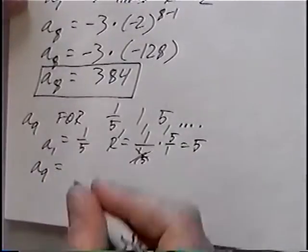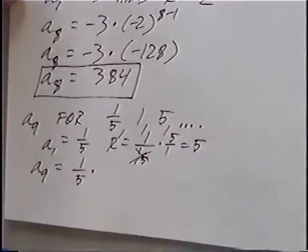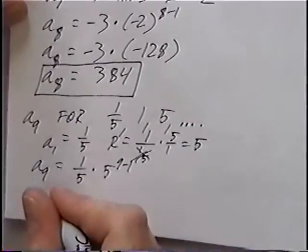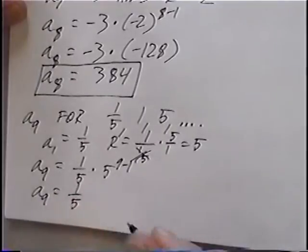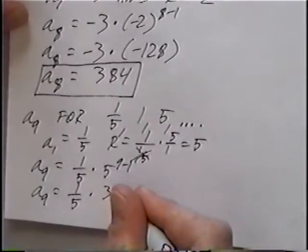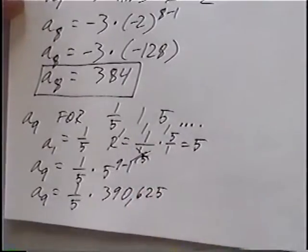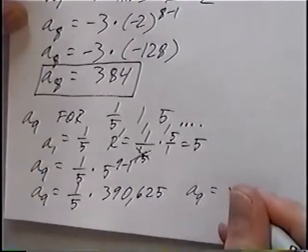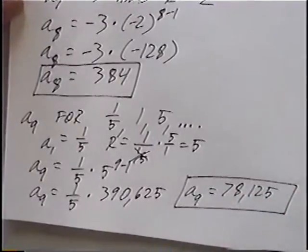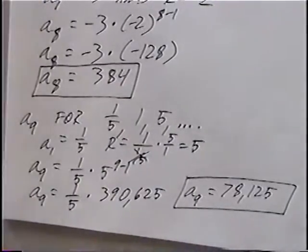Finding a sub 9: a sub 1 is 1/5 times r, which is 5, to the exponent of n minus 1. With n equals 9, the exponent is 9 minus 1 equals 8, so we have 5 to the 8th power, which equals 390,625. Multiplying by 1/5, the final answer is 78,125. The 9th term of the sequence starting at 1/5 and multiplying by 5 each time is 78,125.